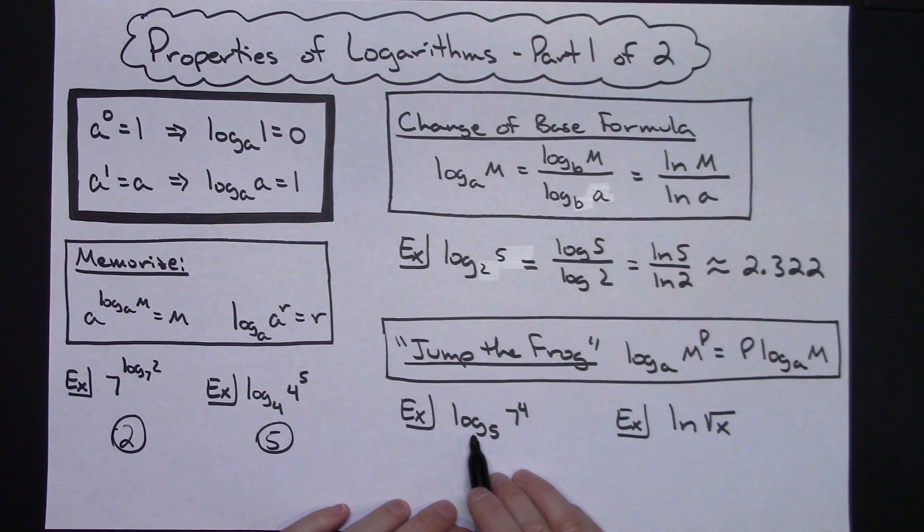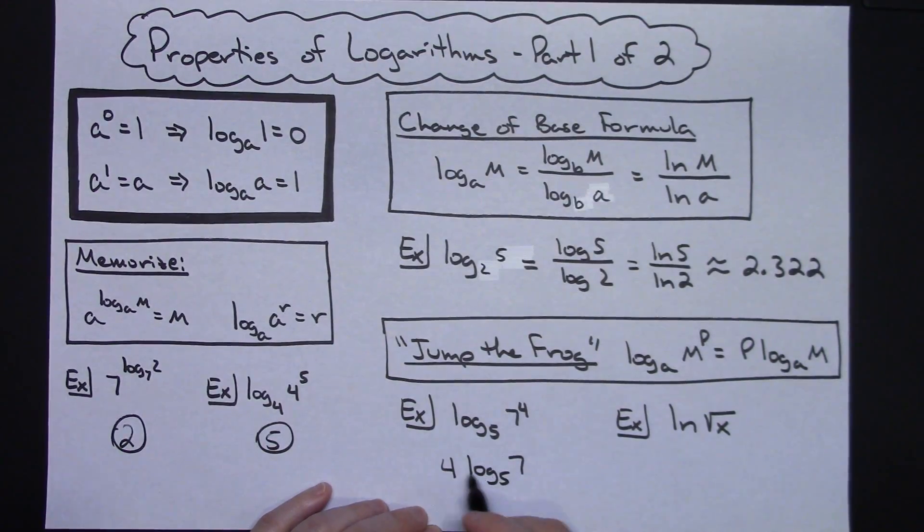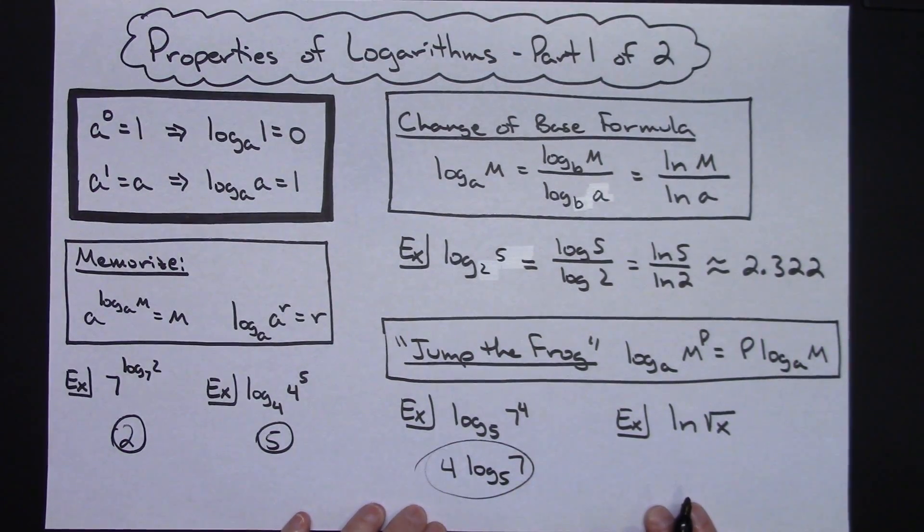So this one right here would be the log of seven to the fourth base five. So my frog is four, he can be jumped down in front. So four times the log of seven base five. That's implementing the jump the frog rule.